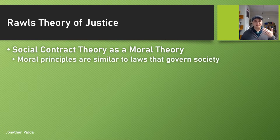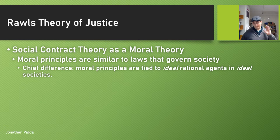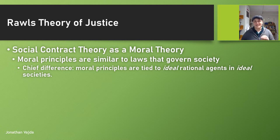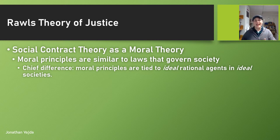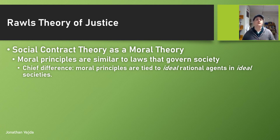Social contract theory says that moral principles are very similar to the laws that govern society, but there's a huge difference. Moral principles are not tied to your culture — they're not tied to what your society happens to agree to. Instead, they're tied to ideal rational agents in ideal societies: people who make the best decisions with the best information available, and have the opportunity to make a society that is not utopian but at least ideal, the best you could have.